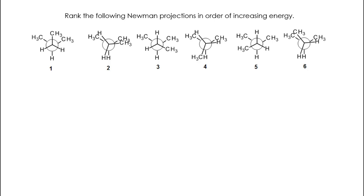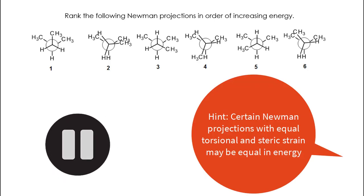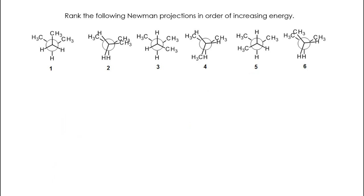Here's a practice problem for you to try: rank the following Newman projections in order of increasing energy. Go ahead and pause the video and then you can check your work. When it says increasing energy, that means we're going from the lowest energy or the most stable to the highest energy or the least stable.